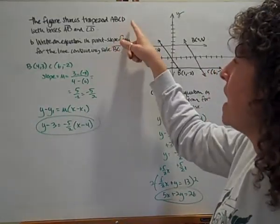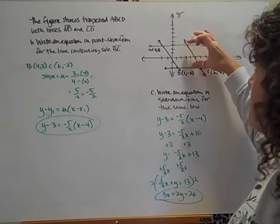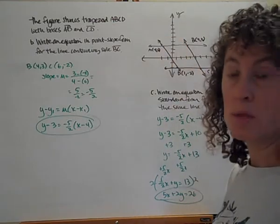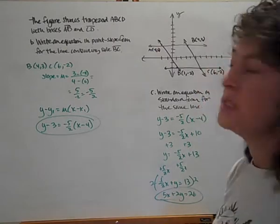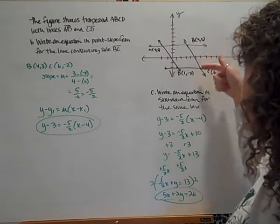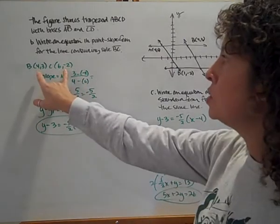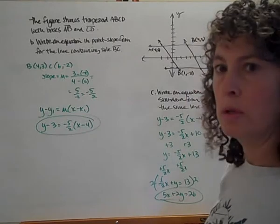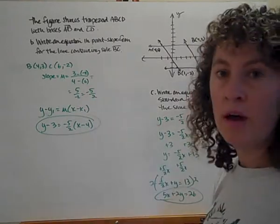Let's put this into practice. The figure shows trapezoid ABCD with bases AB and CD. So that tells us that AB and CD are parallel to each other since they're giving us those as the bases. We want to write an equation in point-slope form for the line containing side BC. So here's line BC. We have two points on that line. So I'm going to use those two points to find the slope. We come to the slope of negative 5 over 2.